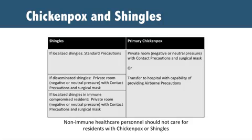The door should remain closed and staff should wear N95 masks while providing care until the resident is transferred. Chickenpox and shingles are both caused by the varicella zoster virus and are managed similarly. The chart shown here describes the appropriate management of residents with chickenpox or shingles. For residents with localized shingles, standard precautions are sufficient as long as the lesions remain covered. For residents with disseminated shingles or immune-compromised residents with localized shingles, contact precautions with a private room with either negative or neutral pressure should be used, and all health care providers and visitors should wear gowns, gloves, and surgical masks upon entry to the room. These precautions should remain in place until the lesions crust over.